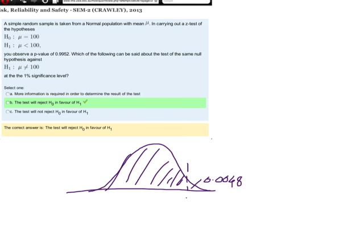So what can be said about the test of the same null hypothesis against μ ≠ 100? Well, now we need to find an area something like this, where we got one on each side, and we're looking for a total area in those two spots of less than 0.01.